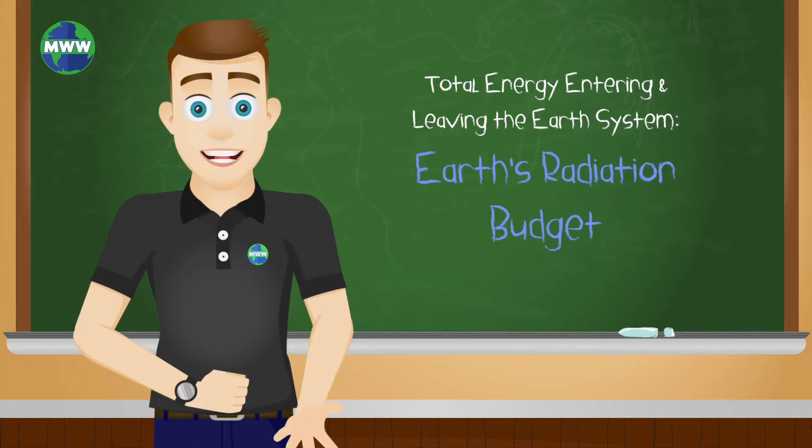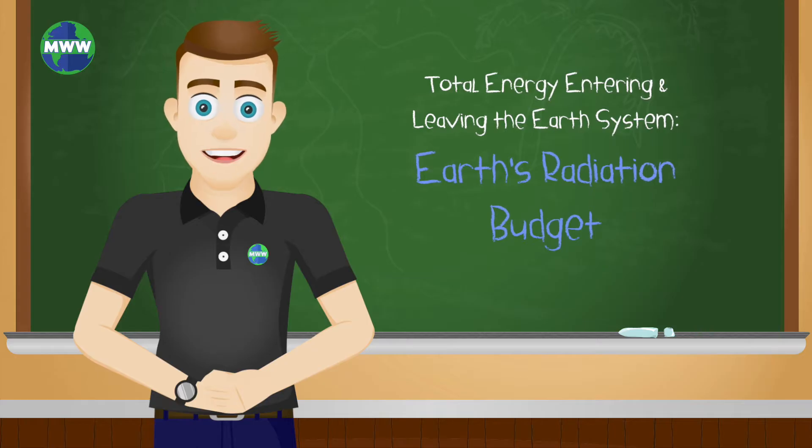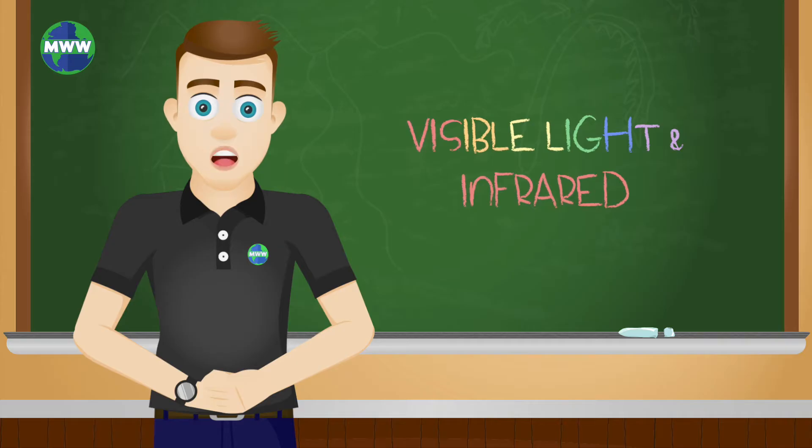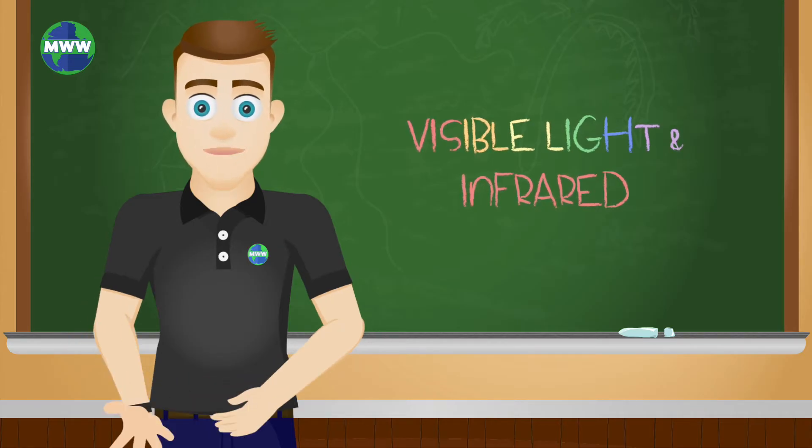The total amount of energy that enters and leaves the Earth system is known as the Earth's radiation budget, which focuses primarily on visible light and infrared radiation on the electromagnetic spectrum.